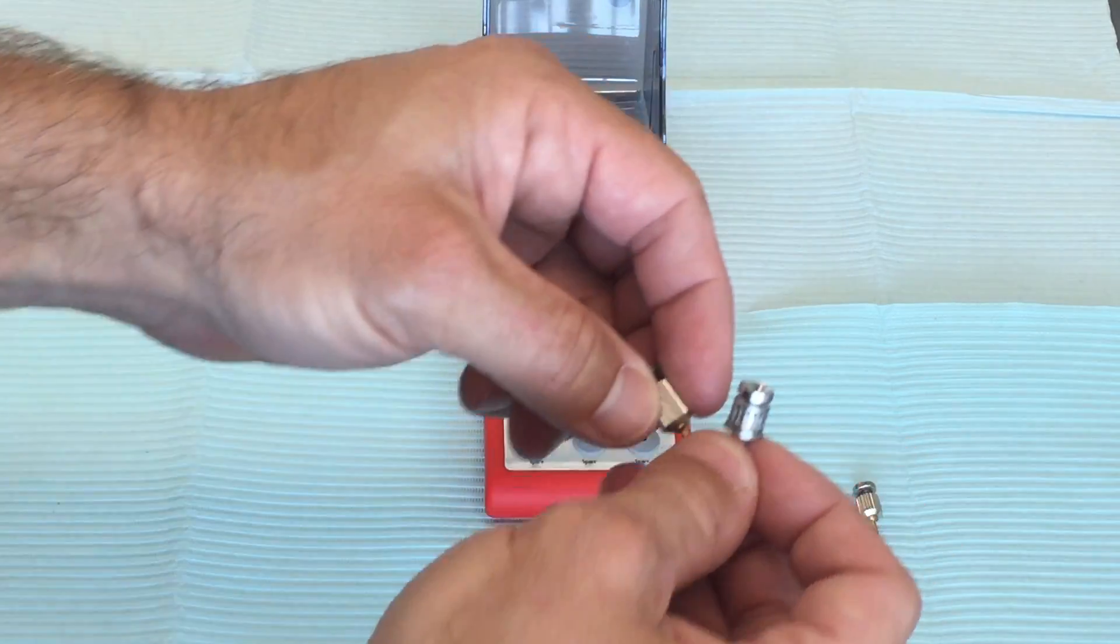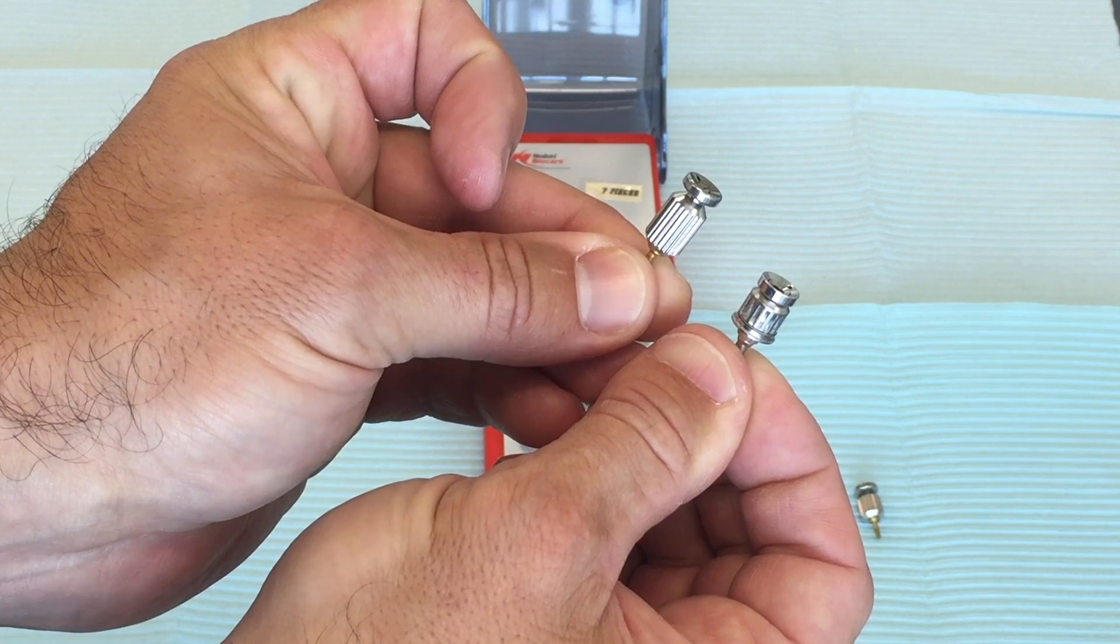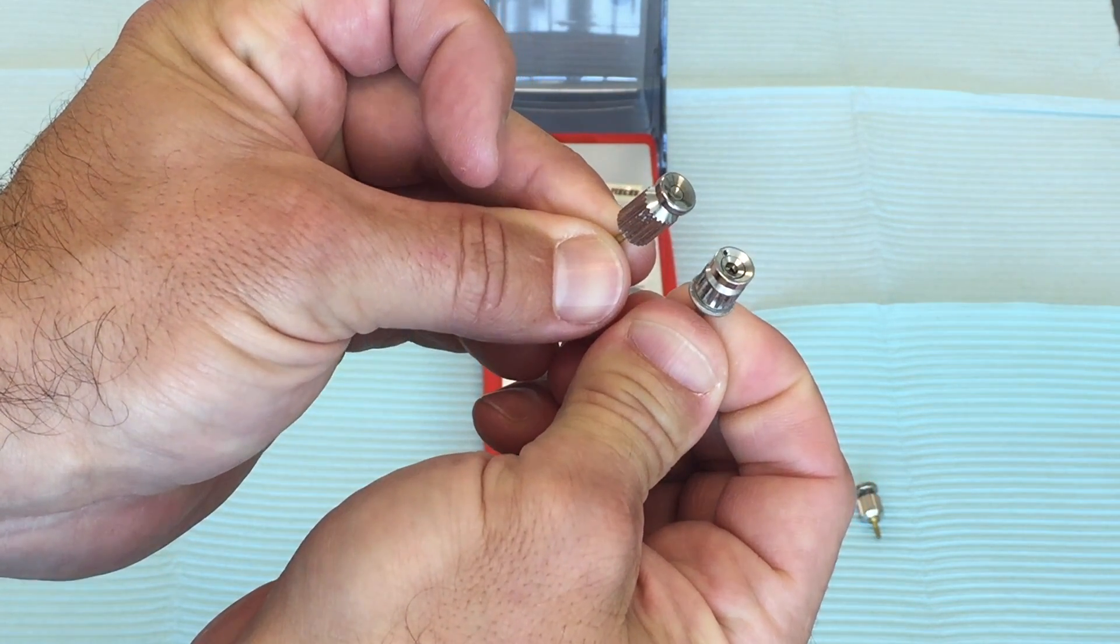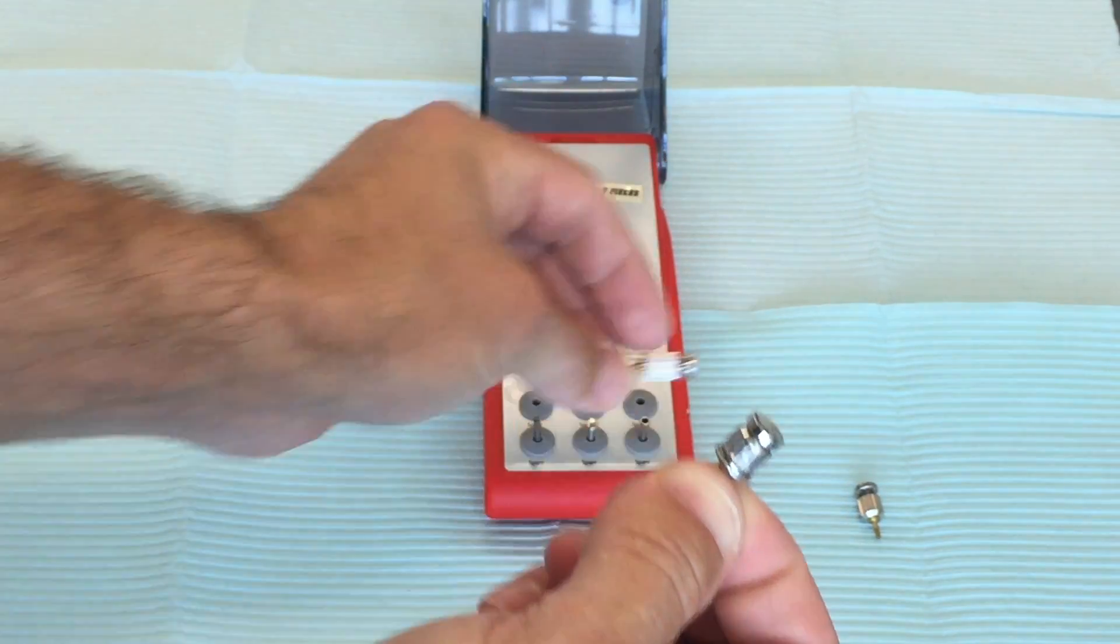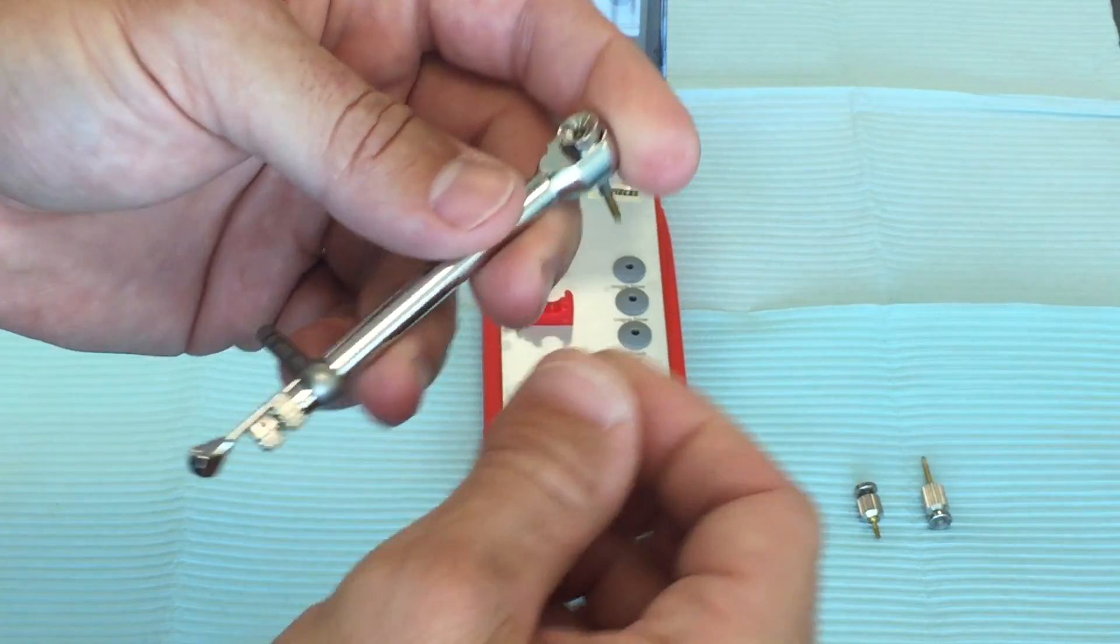The biggest thing to note when using the Nobel kit is paying attention to which driver you have. The one on the left just has a bunch of shallow fins on the handle, the one on the right has a bunch of deeper, wider grooves to it, and this is the only driver that will work with the torque wrench. If you try and use the other one, the torque wrench is just going to spin around the driver and you won't actually tighten anything.